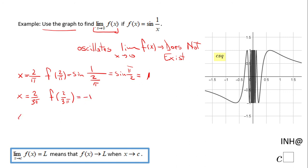And so on, x equals 2/(5π) will be back to 1, x equals 2/(7π) gives negative 1. You notice this function oscillates when you get closer and closer to zero. So the limit does not exist.